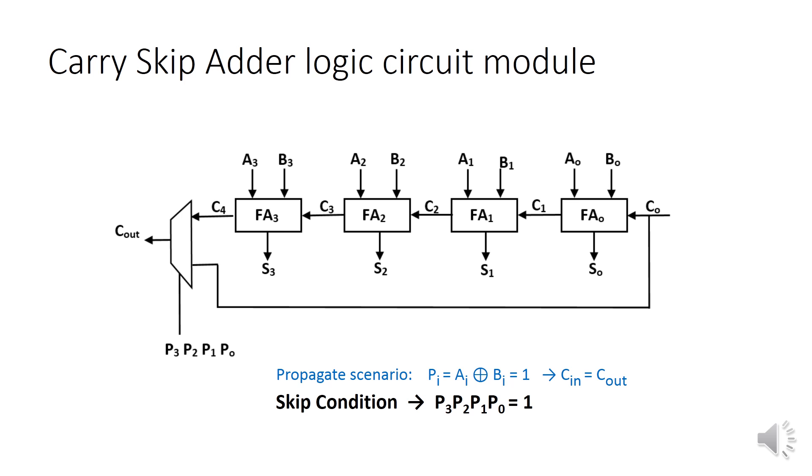So if in a chain of full adders every adder is in propagate mode, then the carry output of the module is the same as the carry input. This condition is P0, P1, P2, P3 equal to 1.